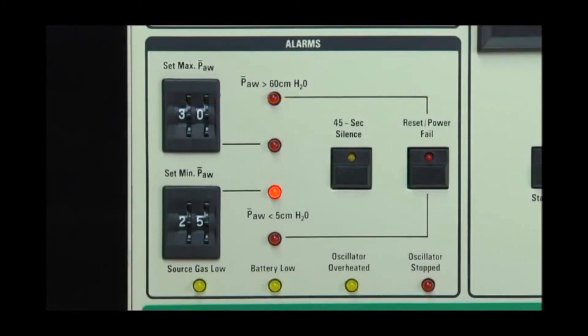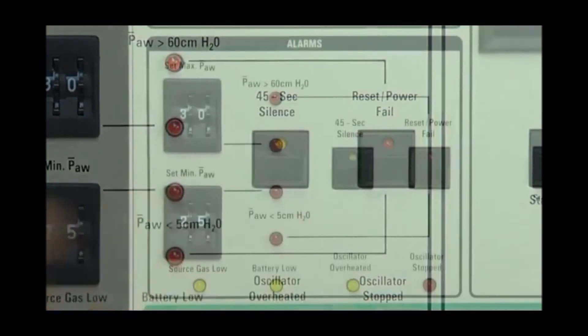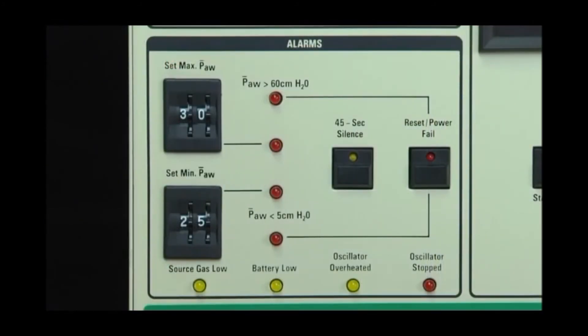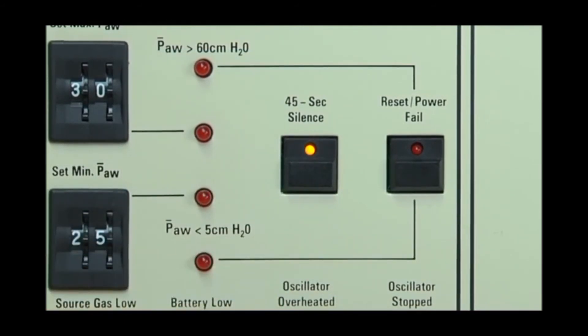Once an alarm condition has been resolved, the circuit must be re-pressurized manually by pressing and holding the reset power fail button. The alarm silence push button silences all audible alarms for 45 seconds. Once activated, this button illuminates a yellow LED. The alarm silence will remain active for the full 45 seconds.